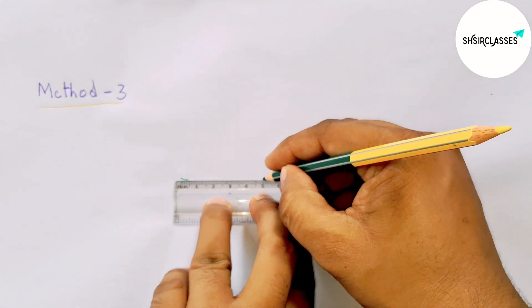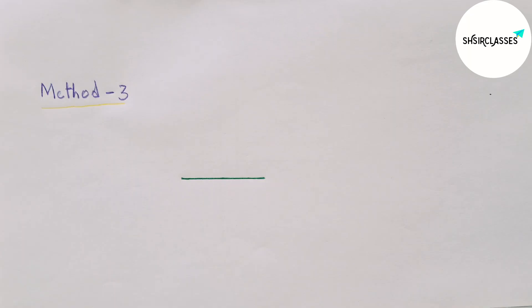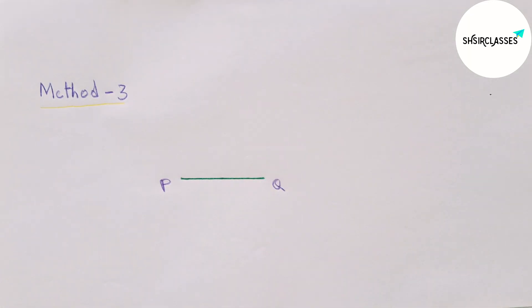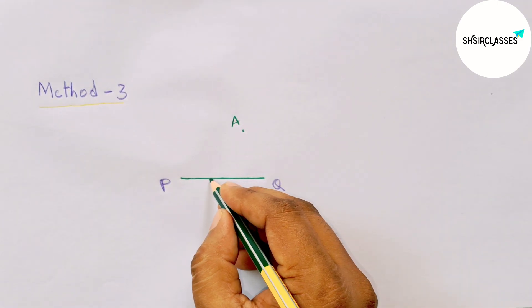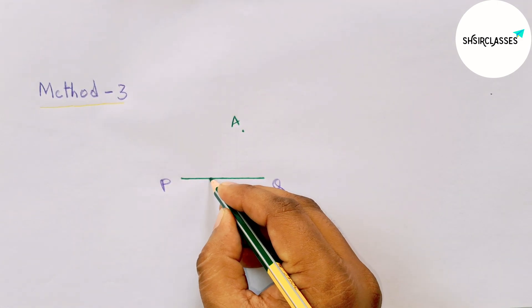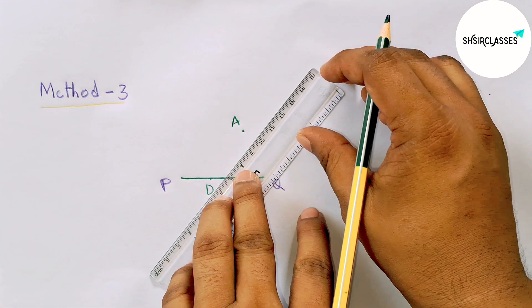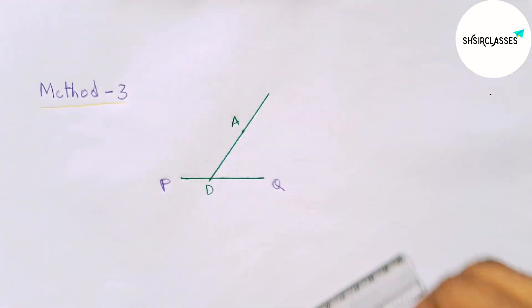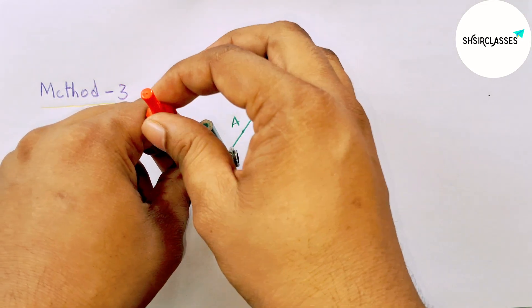Now using method number three to draw a parallel line. Drawing a line segment of length 5 centimeters, labeling points P and Q, so PQ equals 5 centimeters. Taking an external point to line PQ and taking any point D on the line PQ. Drawing a transversal line.